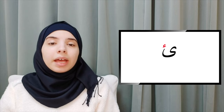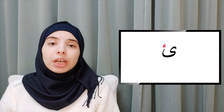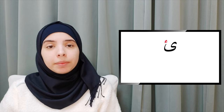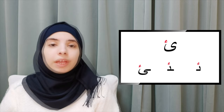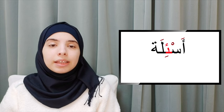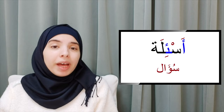Finally, Hamza on Nabira. Many call it Hamza on Yaah, but I prefer to call it Hamza on Nabira because it has no dots as in Yaah. Hamza on Nabira has four shapes. For example, As'ila is the plural form of Su'al — it has two Hamzas: Alif Hamza and Hamza on Nabira.